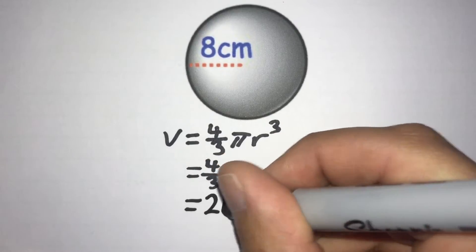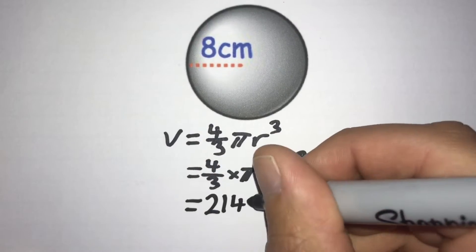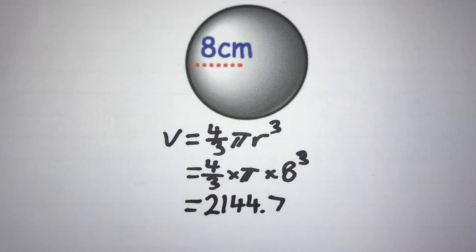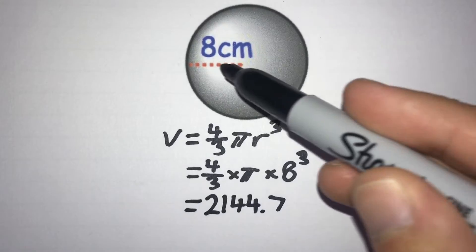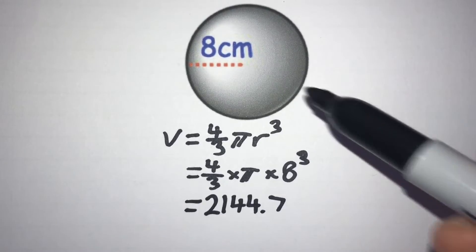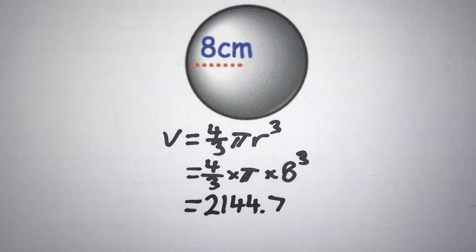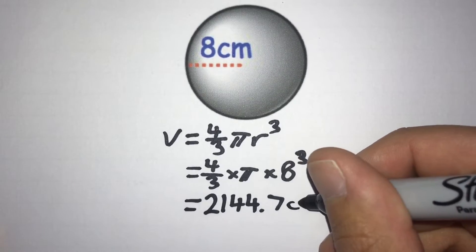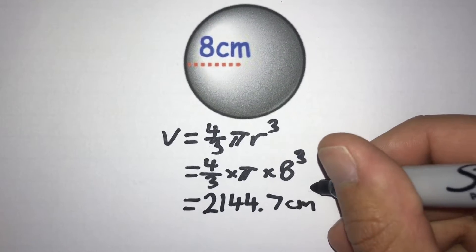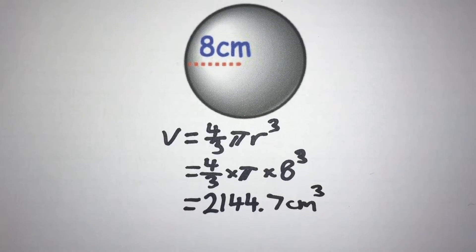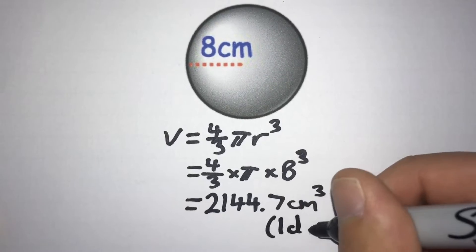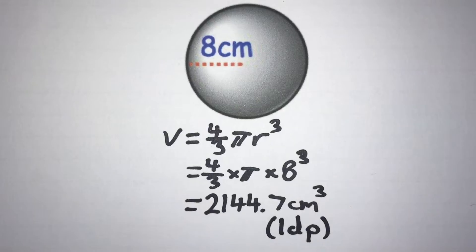So the answer is 2144.7 cm³. Because we used centimetres for our radius, we use centimetres cubed for our volume. That is rounded to one decimal place.